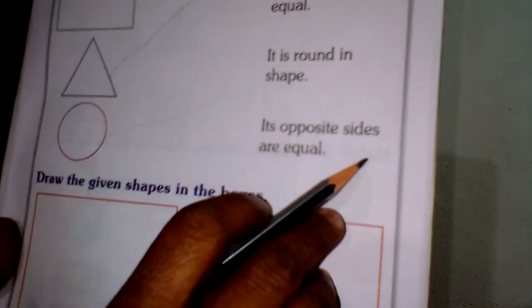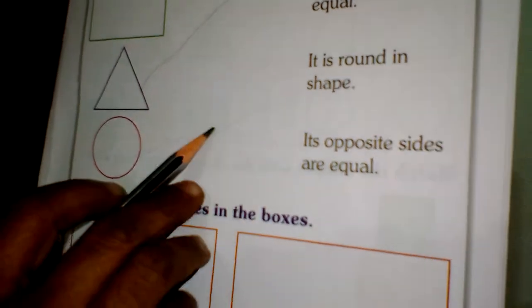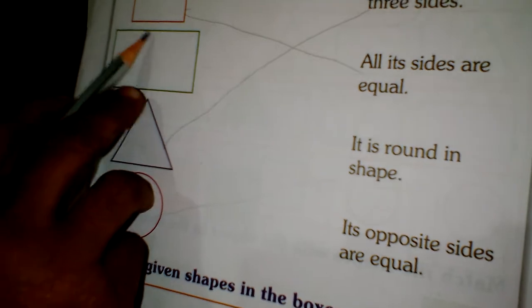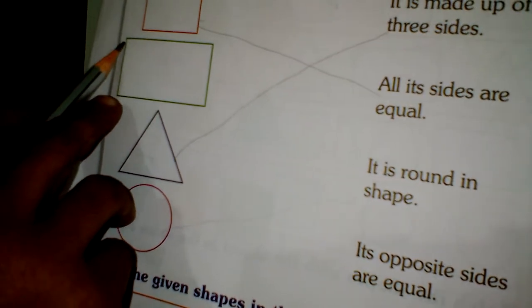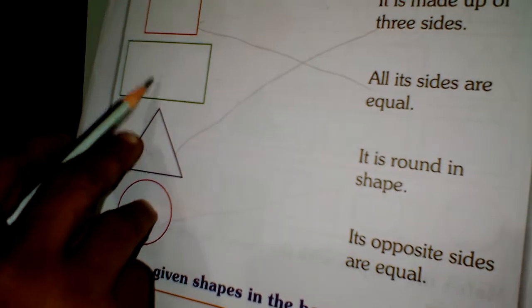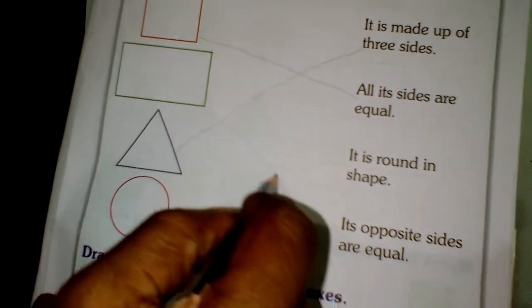Its opposite sides are equal. This is the rectangle. Draw the line.